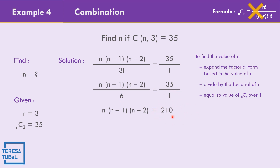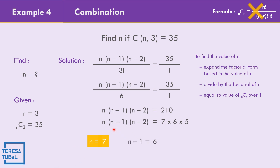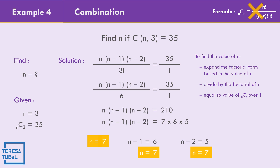We need three consecutive descending factors of 210. The possible factor is 7 times 6 times 5, which equals 210 (not 6 times 5 times 4, which does not equal 210). So N equals 7, confirmed by: N minus 1 equals 6 gives N equals 7, and N minus 2 equals 5 gives N equals 7. Therefore the value of N is equal to 7.